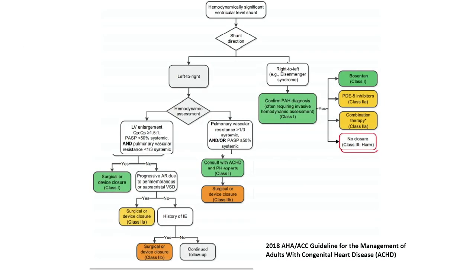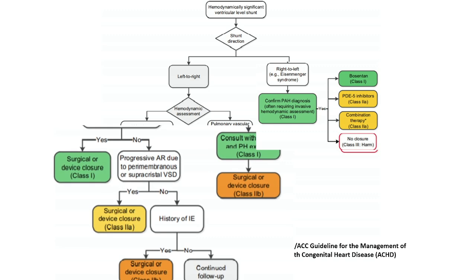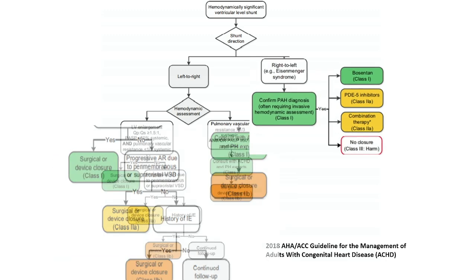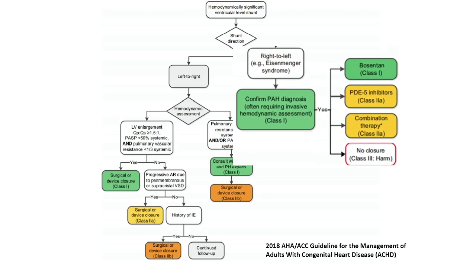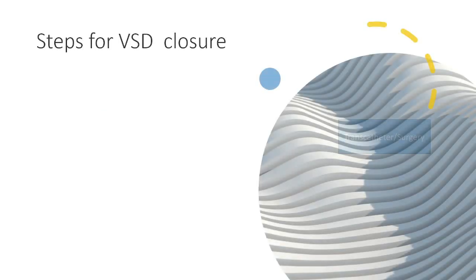When to close: if there is a significant left-to-right shunt, we have to close. But if there is no significant shunt, we consider closure if there is a history of infective endocarditis or progressive aortic regurgitation. If pulmonary vascular obstructive disease has developed, we send to the pulmonary hypertension clinic and treat accordingly.